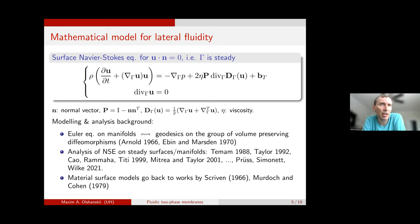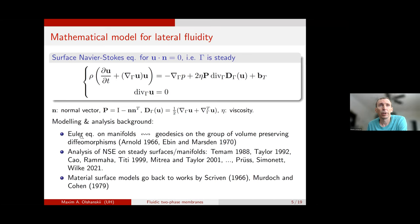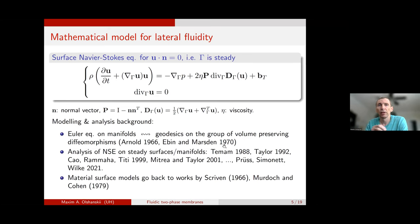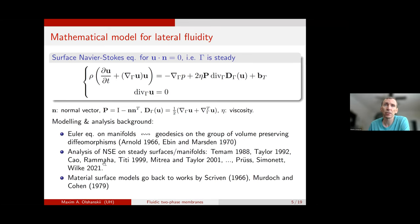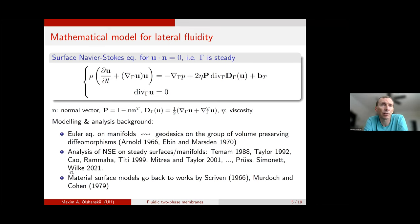Talking about the history of this subject, this is a very classical topic in analysis. It can be traced back at least to the work of Arnold, where he related the Euler equation on manifolds with geodesics from the group of volume-preserving diffeomorphisms. Further, that was extended by Ebin and Marsden to show well-posedness of Navier-Stokes equations on manifolds. The analysis of these equations is still a topic of current research; I refer to recent work by Simone and co-authors.